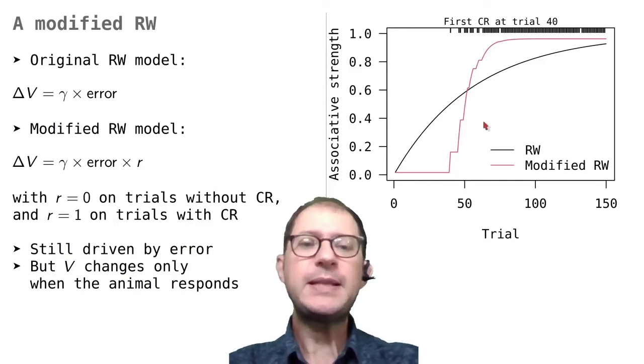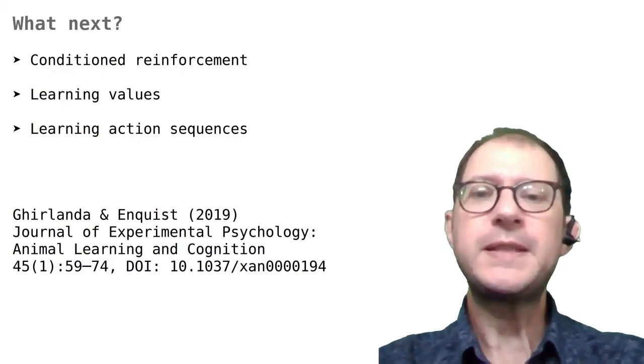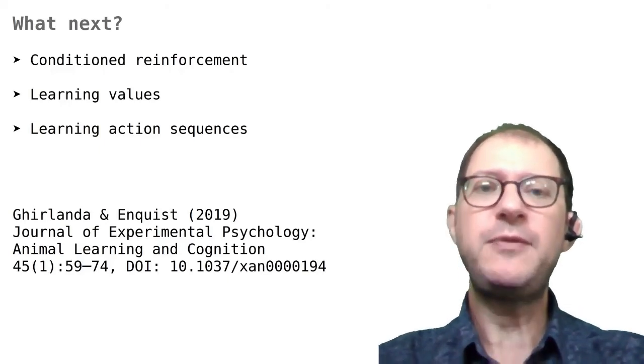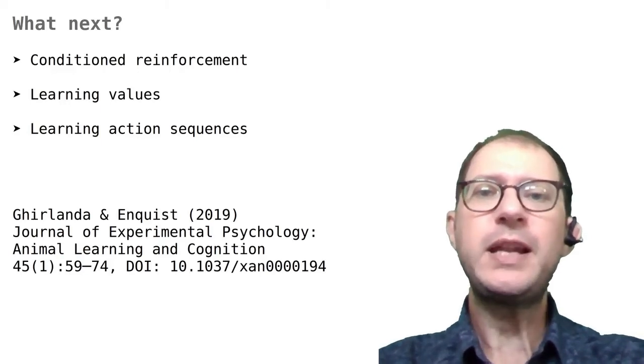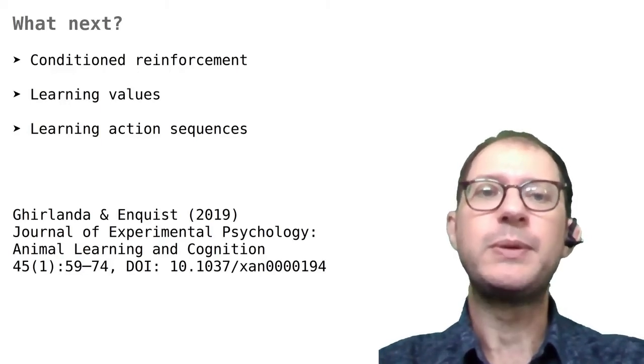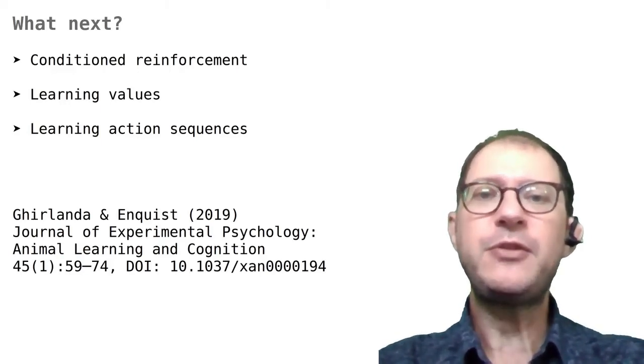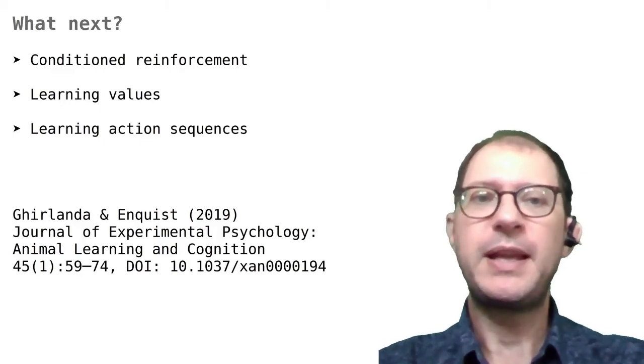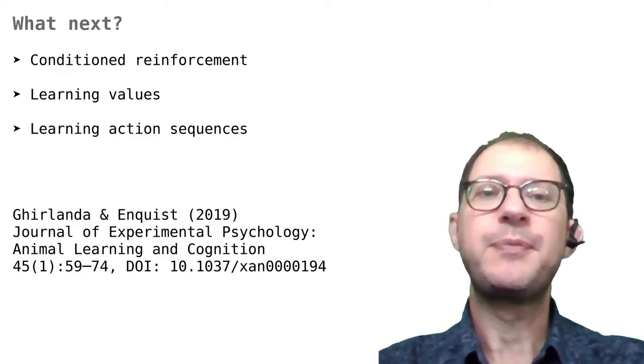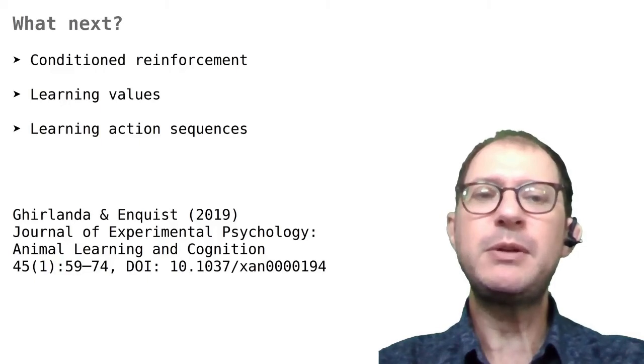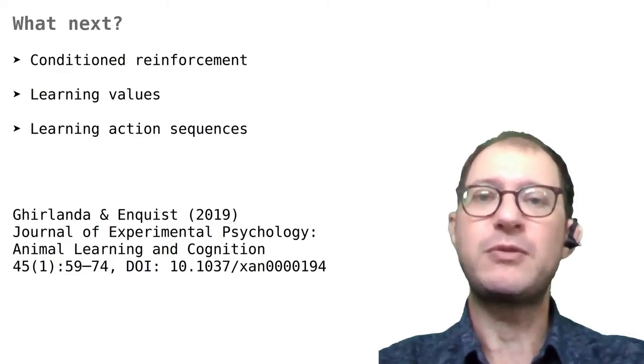You can repeat the same exercise with all rabbits and you find out that the modified model is either better than the original RW or equally good at least. In conclusion, we have seen that looking at how animals learn individually might tell a bit of a different story than looking at how they learn on average as a group. We have also seen that the original RW model has some trouble explaining how individuals learn, but also that this might be possible to fix with a relatively small change to the model.